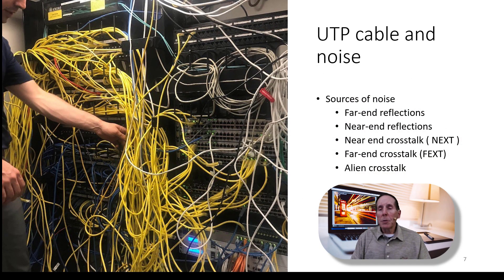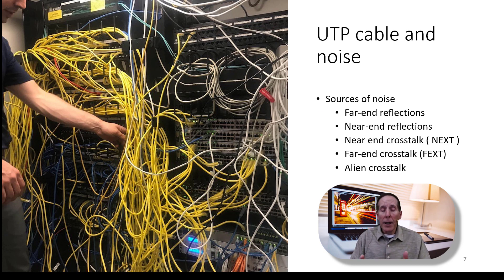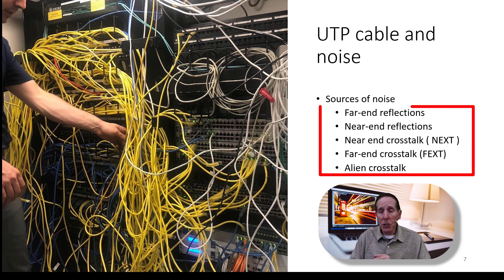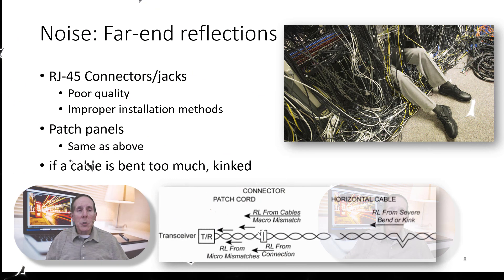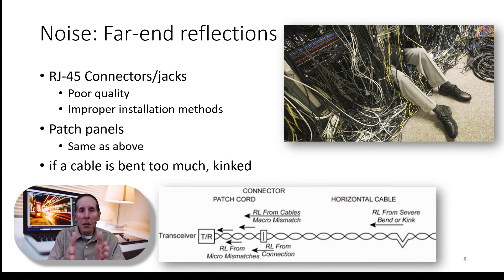Unshielded twisted pair cable is susceptible to a variety of electrical noise problems. There are five: far-end reflection, near-end reflection, near-end crosstalk (known as NEXT), far-end crosstalk (known as FEXT), and alien crosstalk. When I talk about near-end reflection and far-end reflection — anytime I transmit electrical energy and some of that energy reflects back into the transmitter, what does that mean for IT pros?